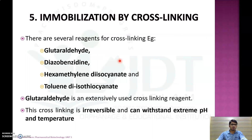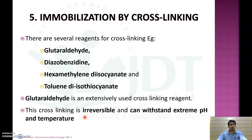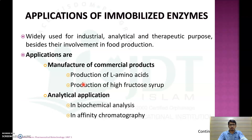Examples of reagents used for cross-linking include glutaraldehyde, diazobenzidine, hexamethylene diisocyanate, and toluene diisocyanate. Glutaraldehyde is an extensively used cross-linking agent; it is irreversible and can withstand extreme pH as well as temperature conditions. That concludes the immobilization technique by cross-linking.